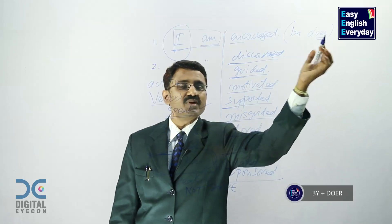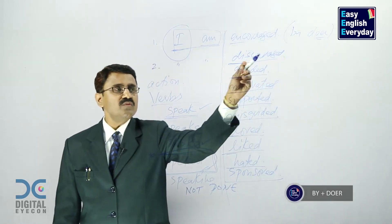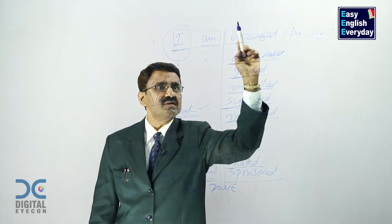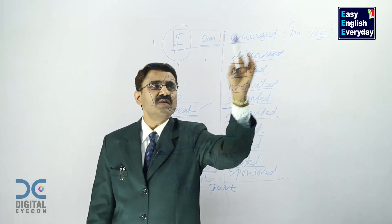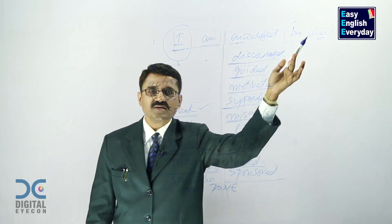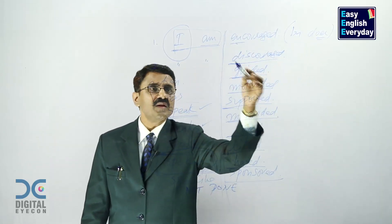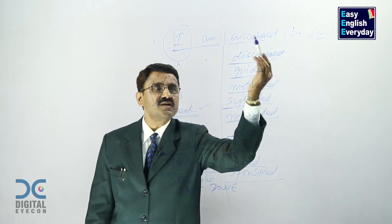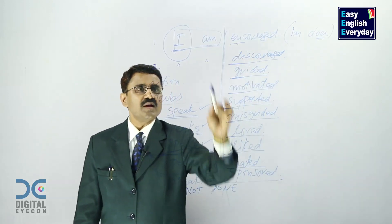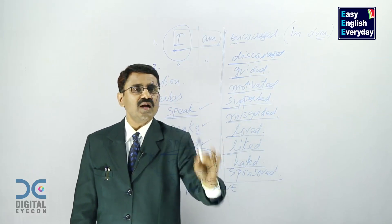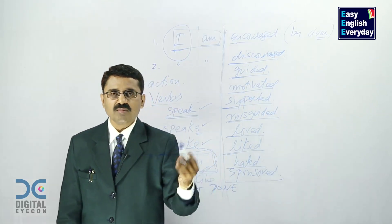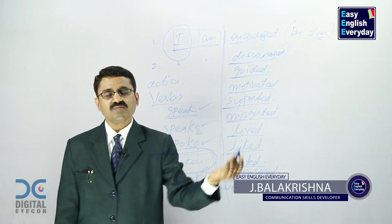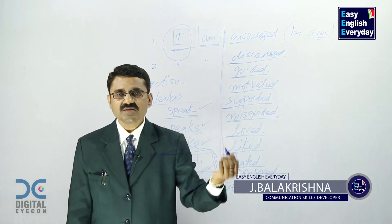We call it 'by plus doer.' Why do we use the word doer? Because the action is done by this person. 'I am encouraged by my father' — father is the doer. 'I am discouraged by my friends' — my friends are the doers. So here, I am not the doer. I am not doing any action. The actions are done by others to me.